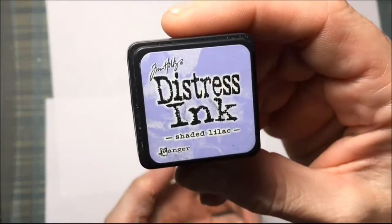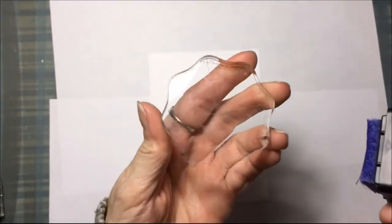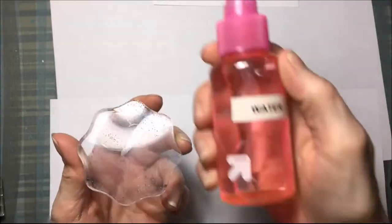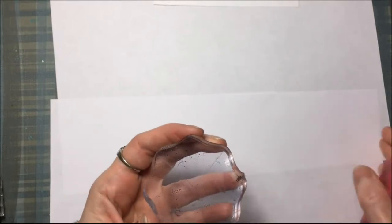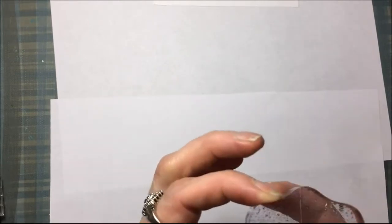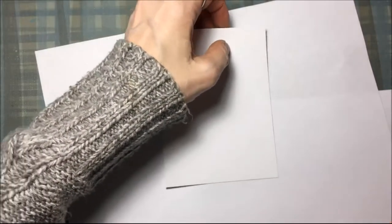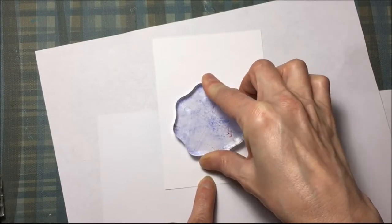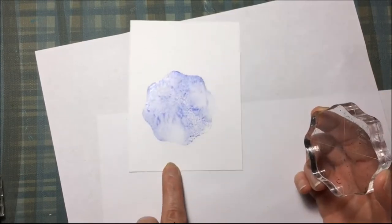This cardstock panel is 3 3/4 by 5 inches, and I'm going to do the smushing technique. That's just an acrylic block stamping block, and that's distress ink, shaded lilac. I'm going to smear it or stamp it all over that acrylic block, then spritz the acrylic block with some water in a spray bottle. Then I'm going to take that acrylic block and smush it onto that cardstock panel. That's why this is called the smushing technique. I'm going to do this about 3 times until I get a blob that I like.